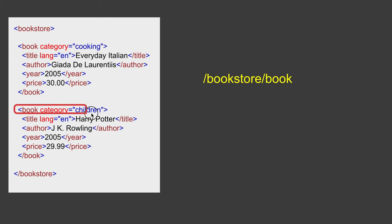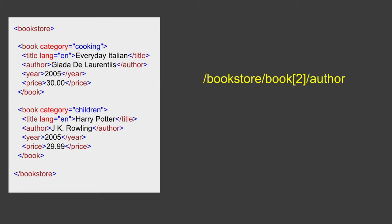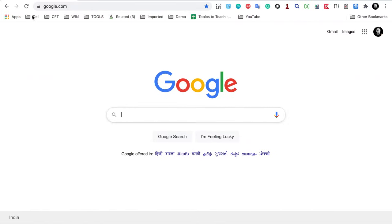This XPath can refer to either the first or second book element, because we have two book elements under bookstore. So I have to define which book element I want to access. I will give the position — the second book element — by saying 2 in square brackets. Now I say forward slash and author, and this XPath will refer to that particular element and extract the value 'JK Rowling'.